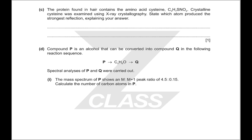Crystalline cysteine was examined using X-ray crystallography. For which atom produces the strongest reflection: sulfur, because it has the highest electron density. X-ray crystallography is all about electron density, and sulfur has the most electrons because it's the biggest atom — it's in its third shell instead of its second or first shell.